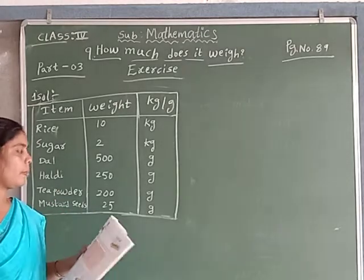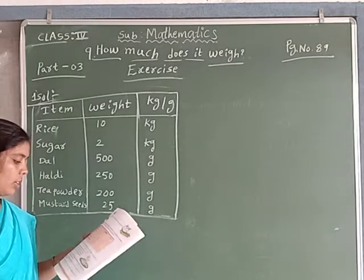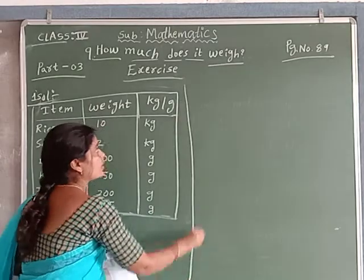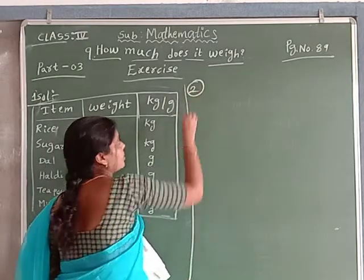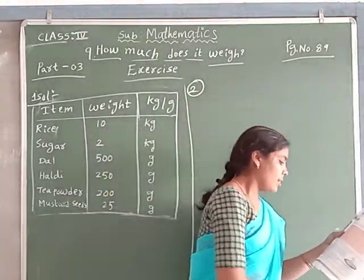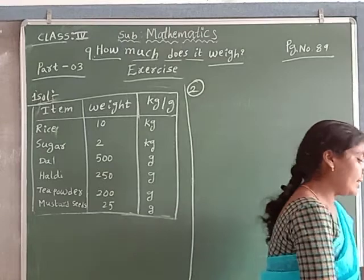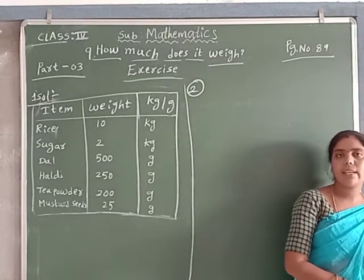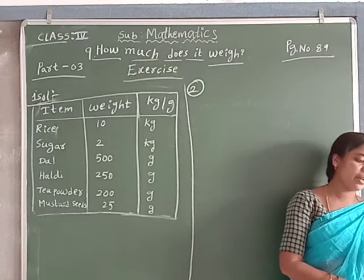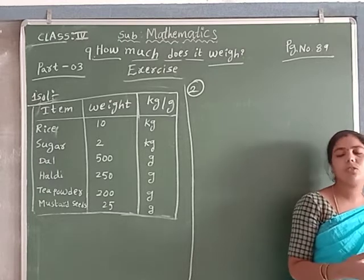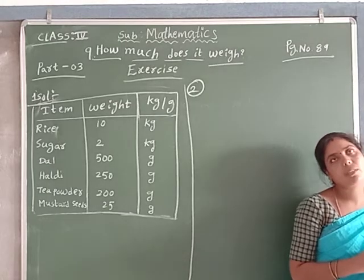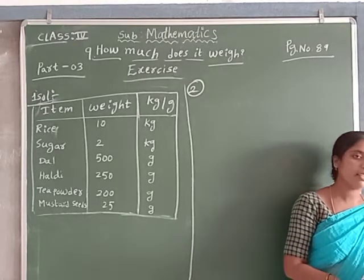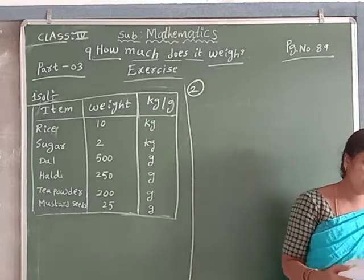Okay, complete it. Now second question. Five things we usually buy in kilograms and five things we usually buy in grams. So we usually buy in grams — five things you say — and five things in kilograms. Okay, now let's go.